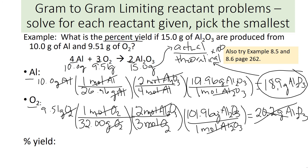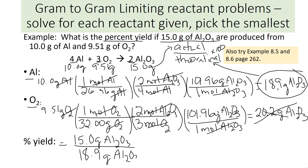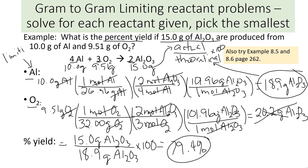Now we go to percent yield — actual over theoretical. The actual is the given 15.0 grams of Al₂O₃; the theoretical is the calculated 18.9 grams of Al₂O₃. So 15 divided by 18.9 times 100 equals 79.4 percent. That is our percent yield, and our limiting reactant is aluminum.